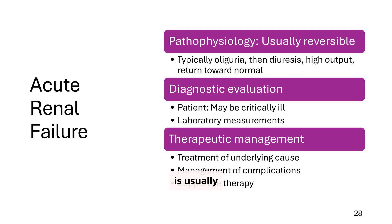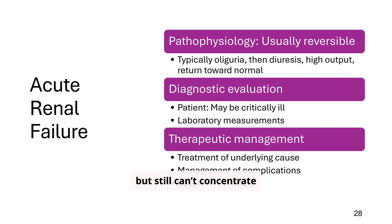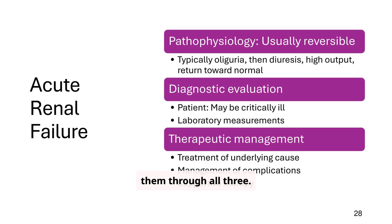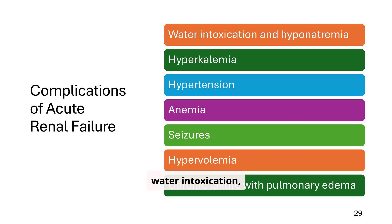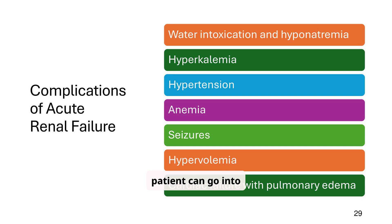Acute renal failure is usually reversible. The typical progression involves an oliguric phase where urine drops dramatically, followed by a diuretic phase where the patient urinates a lot but still can't concentrate urine well, and finally a recovery phase where labs and kidney function normalize. Complications include water intoxication, hyperkalemia causing dangerous arrhythmias, hypertension, anemia, seizures, and cardiac failure with pulmonary edema. If untreated, the patient can go into multi-organ failure. Labs and ECG monitoring are critical. For high potassium: give calcium gluconate, insulin plus glucose, and consider dialysis.